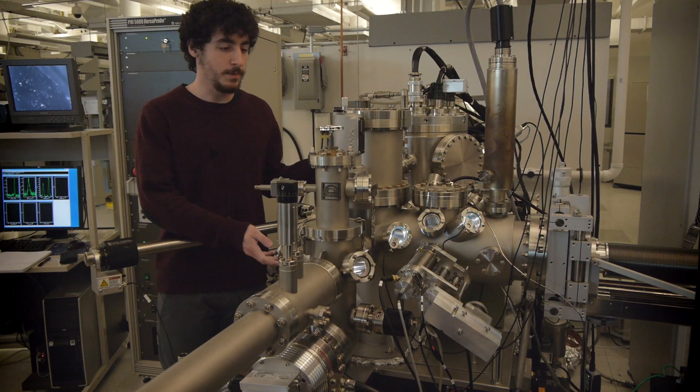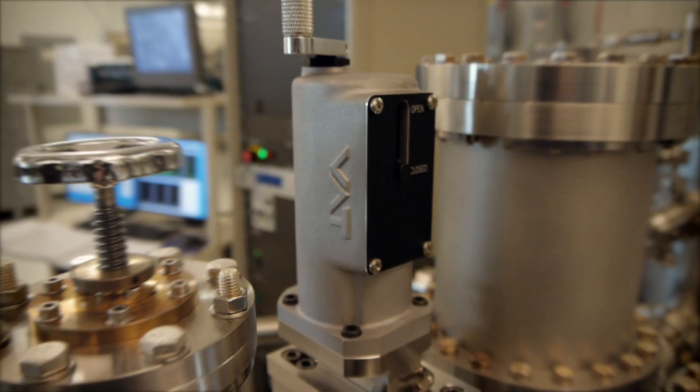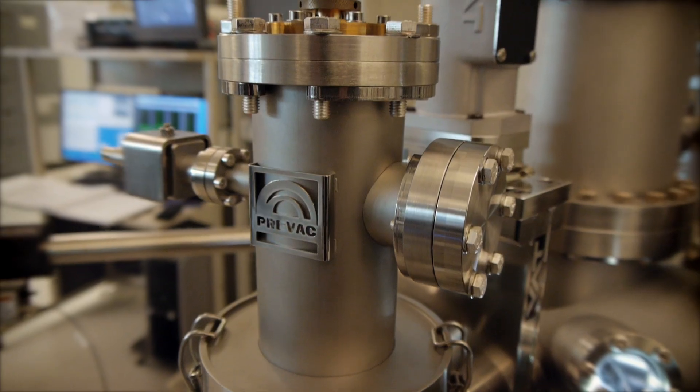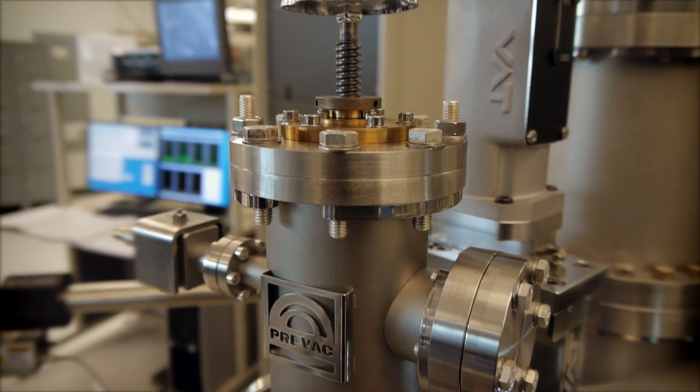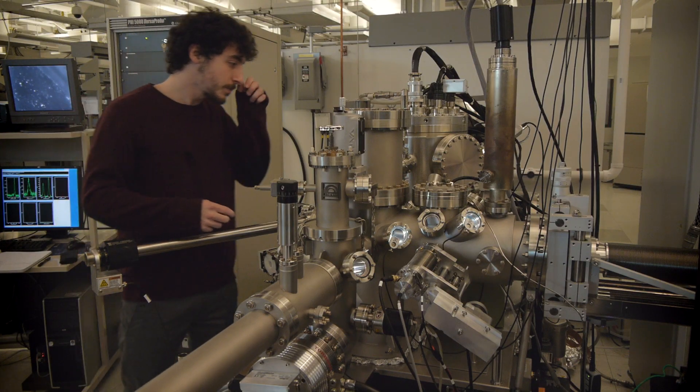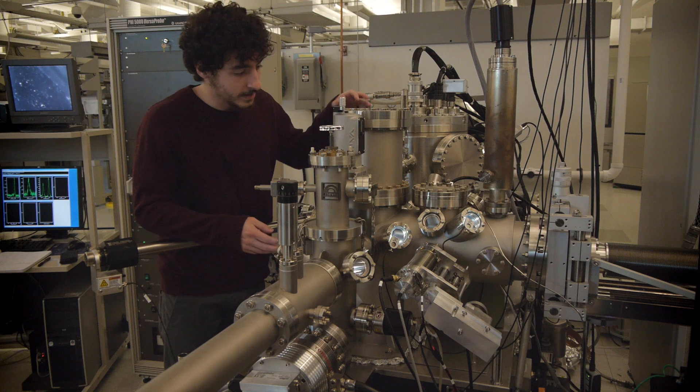This is our sample preparation chamber, and this is a gate valve that locks it off from our load lock here. We try to keep pressure below 1 times 10 to the minus 9 millibar, and we have a bunch of different things on this.